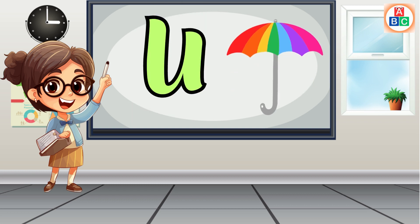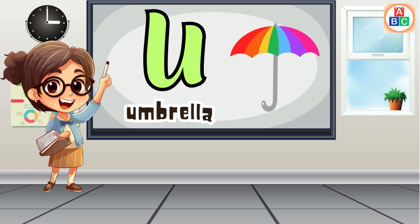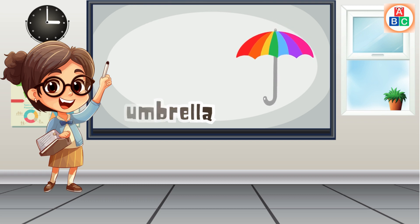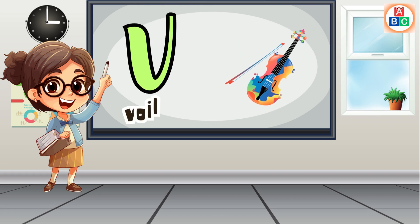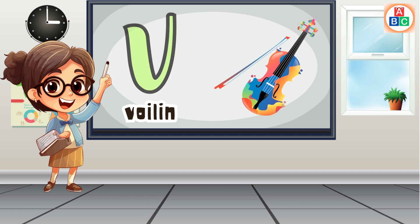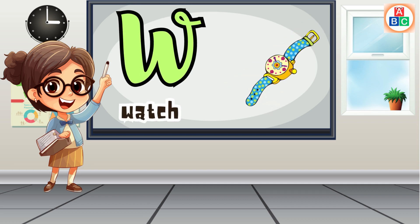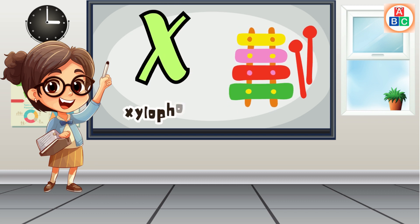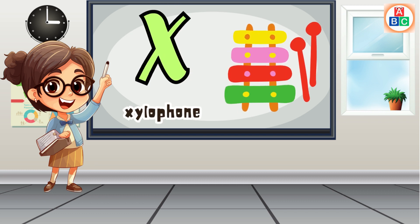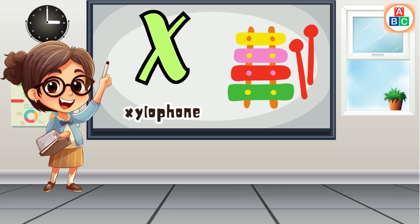U is for umbrella, u-u-umbrella. V is for violin, v-v-violin. W is for watch, w-w-watch. X is for xylophone, x-x-xylophone.